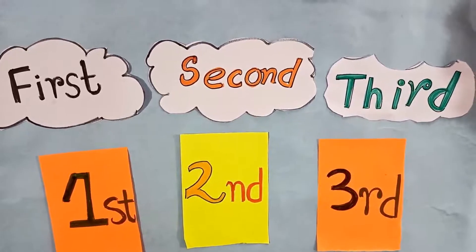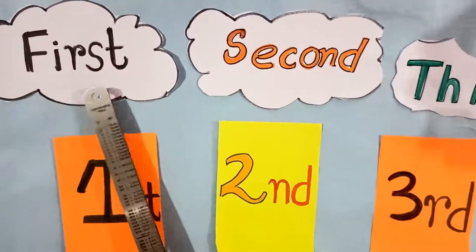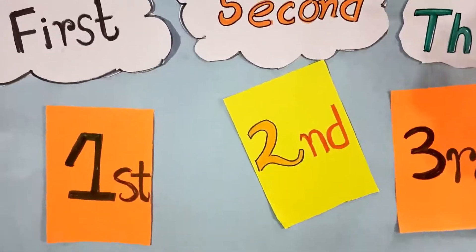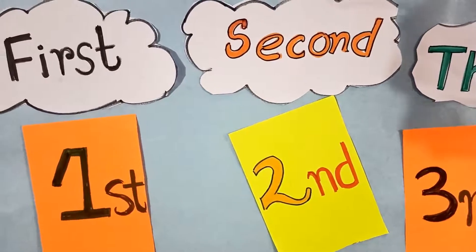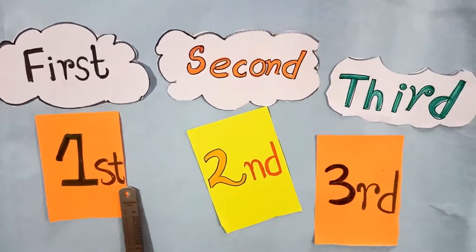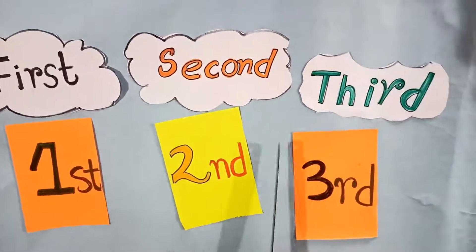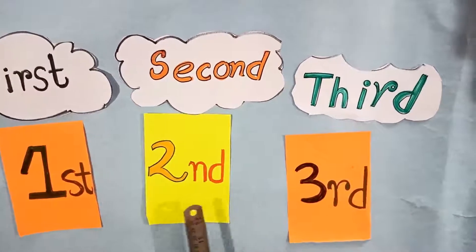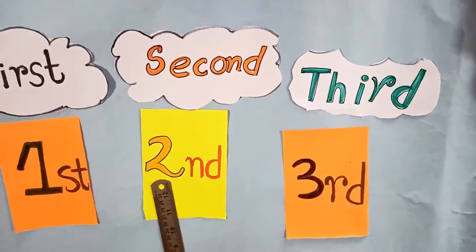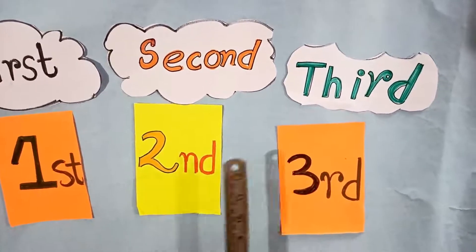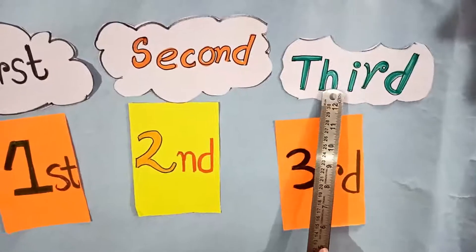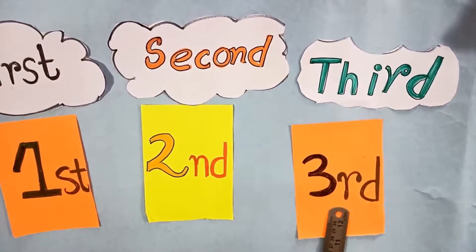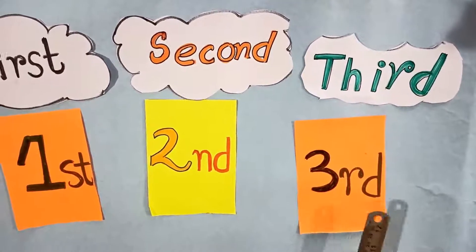Okay? See, this is the spelling of first. F-I-R-S-T, first. And in number, we will write 1-S-T, first. Now, this is second. S-E-C-O-N-D, second. In number, we write 2-N-D. And next one is third. T-H-I-R-D, third. In number, we write 3-R-D, third.